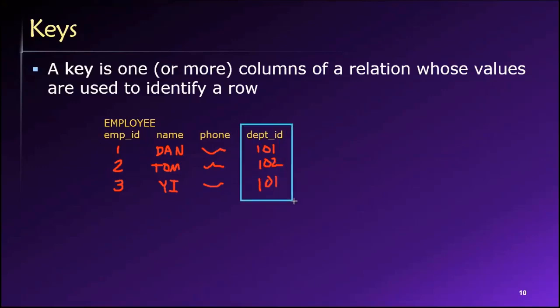But I also have this type of key, department ID. And you can see here that we have some repeating values. And in this case, we would take this to mean that both Dan and Yi work in the same department, whatever 101 is, maybe it's the accounting department.